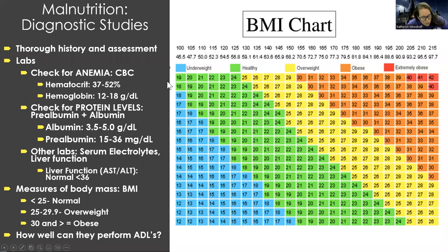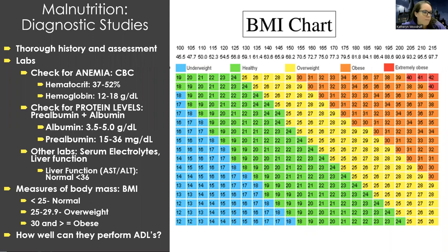For diagnostic studies, we want a thorough history and assessment about their intake, general preferences, and dietary habits. Some labs we check: we look for anemia because it is closely related to nutrition — you need certain things to build blood cells. We check the CBC, including hemoglobin and hematocrit. The hematocrit relates more to fluid status and hydration, while hemoglobin tells us more specifically about anemia. We also check protein levels — pre-albumin and albumin — which are both signs of nutritional status in malnourished patients.